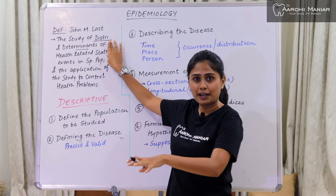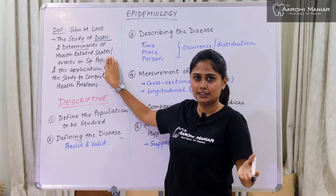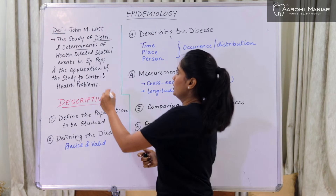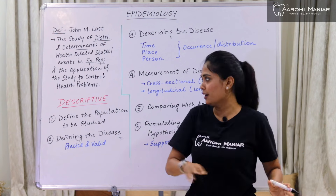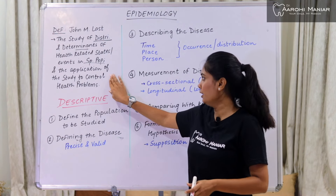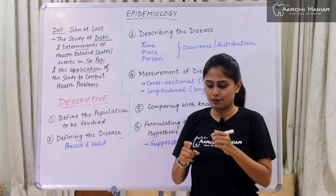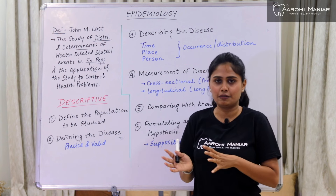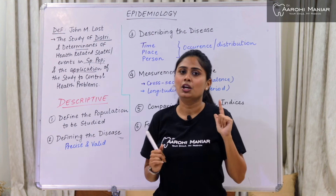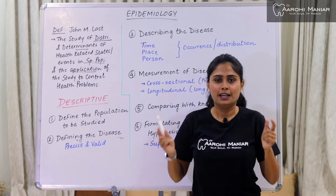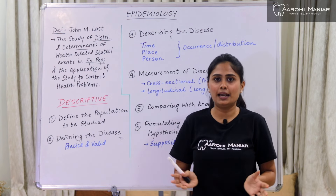We have to study those determinants and the distribution of the conditions of the health related states or events in a specific population — not all populations, just a group of people or people of a certain area — and the application of this study to control the health problem. So the full definition by John M. Last is: the study of distribution and determinants of the health related states or events in a specific population and the application of this study to control the health related problems.